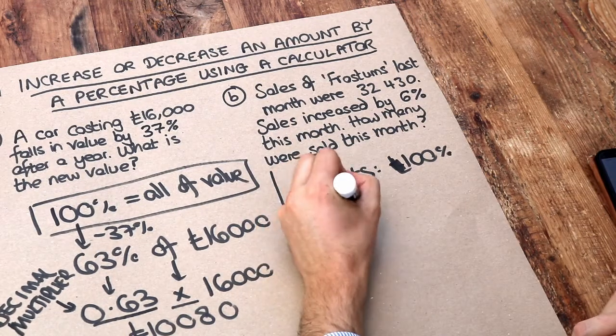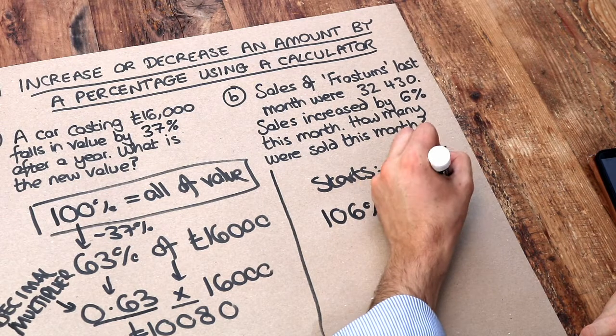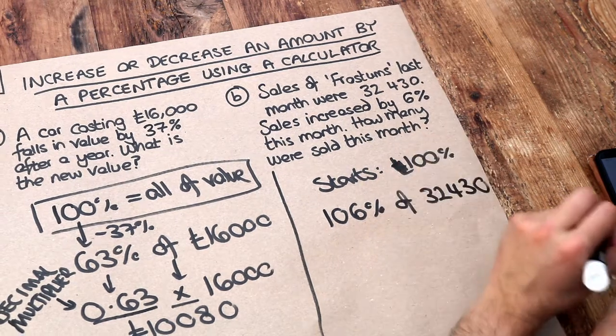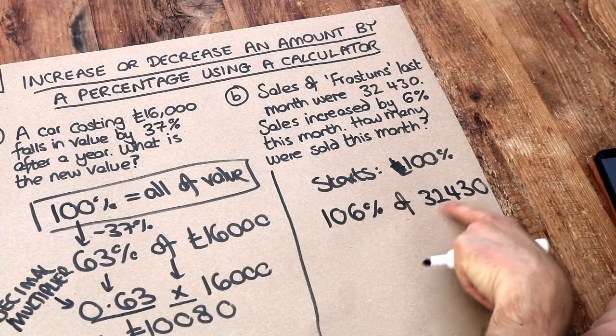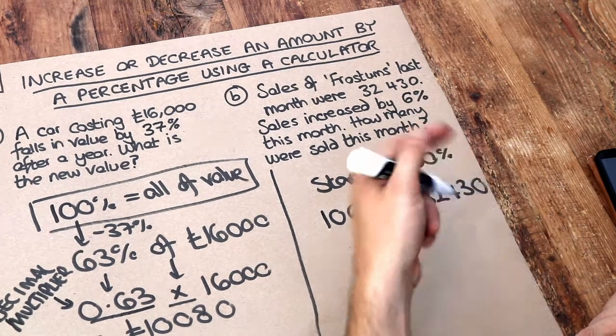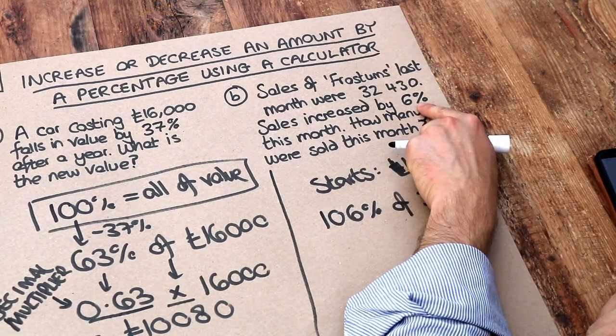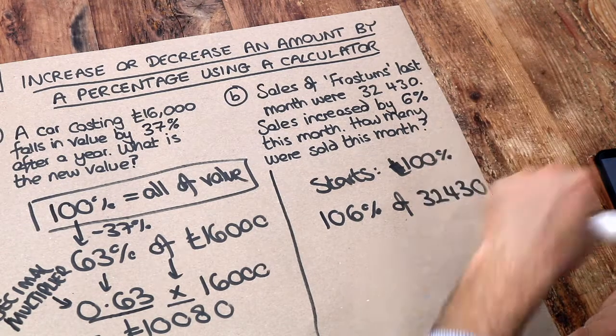So we want to find 106% of 32,430. And if you think about it that's just going to slightly increase its value because 100% of 32,000 is its 32,000. So 106% is going to make that a little bit bigger which is what we expect because if something increased by 6% it's not that much of it.